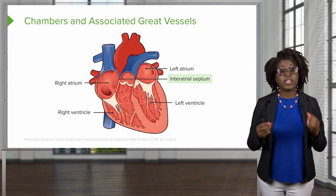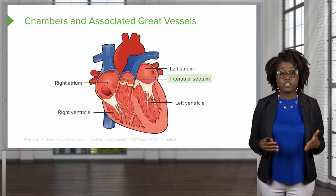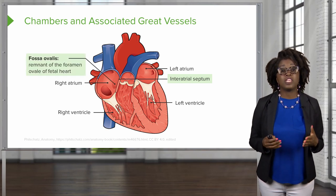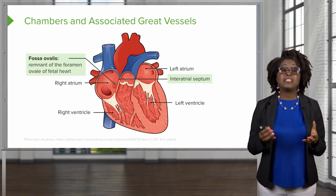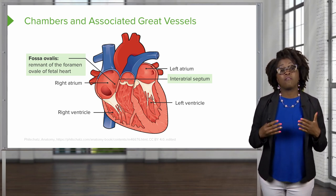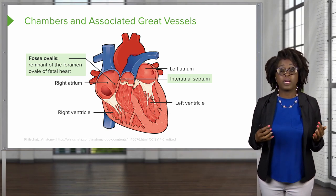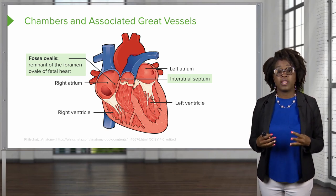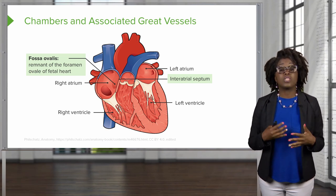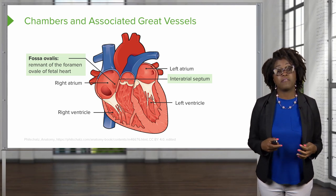There are also several thickened walls known as septa in the heart. We have the interatrial septum, which separates the atria of the heart. In between these, we also have an indentation known as the fossa ovalis. This is a remnant of the foramen ovale of the fetal heart, which is a shunt that allows blood to go from the right atrium to the left atrium, skipping the lungs in the fetus since fetuses are not using their lungs. This foramen closes at birth and becomes the fossa ovalis.